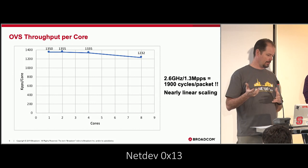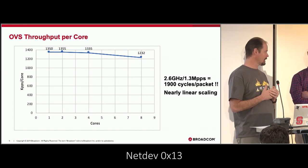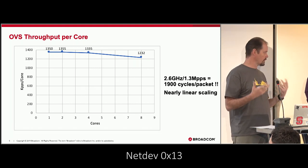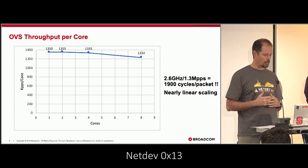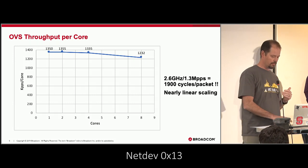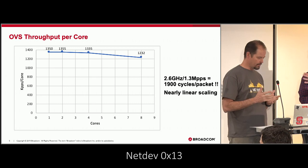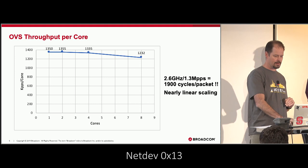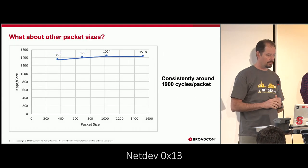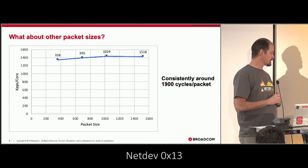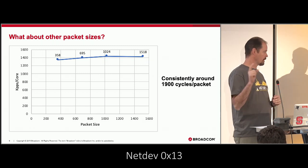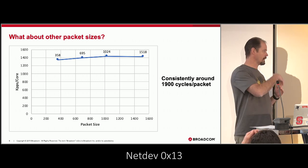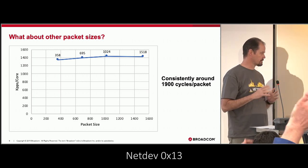What's not great is that we see performance at about 1,900 cycles per packet, which is pretty expensive. But we're just trying to establish a baseline — this is what we saw when forwarding with the kernel data path, no hardware offloads. This is simple Layer 3 forwarding: traffic comes in on one port from a traffic generator and goes out on the other port.